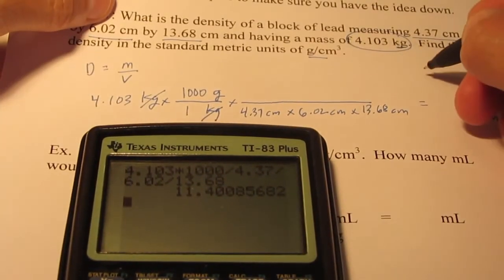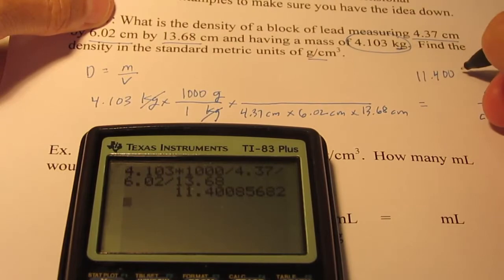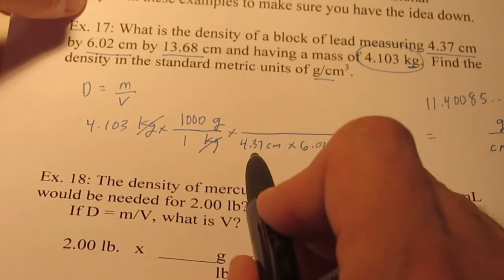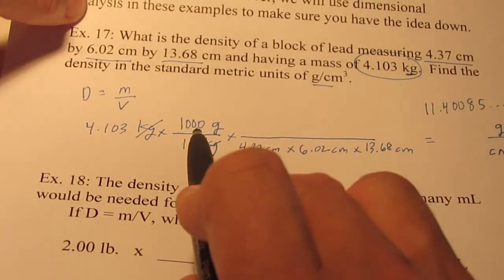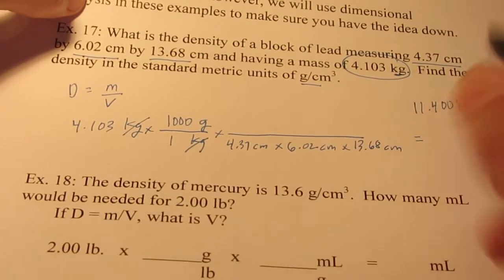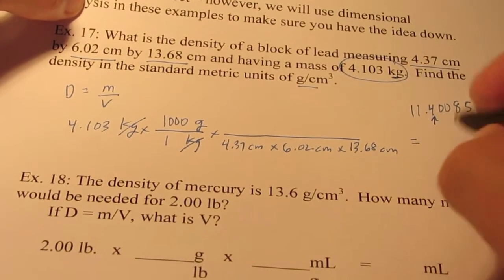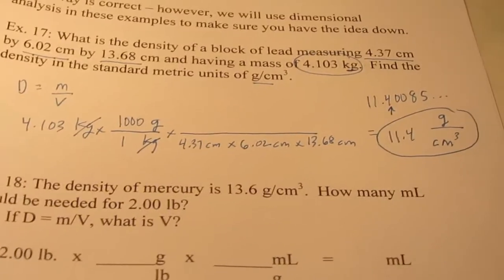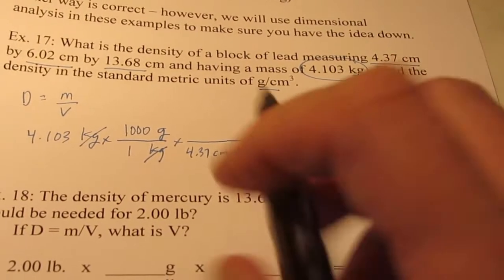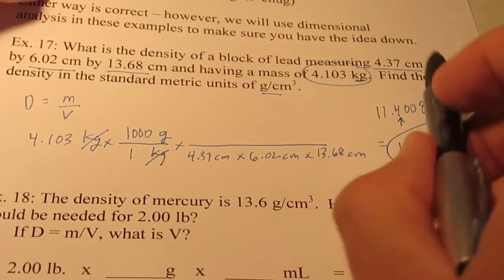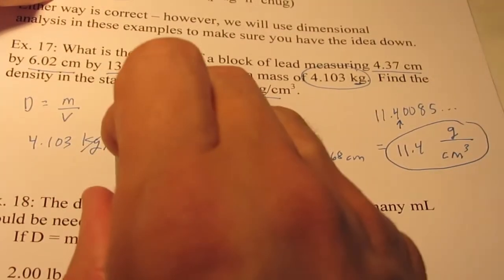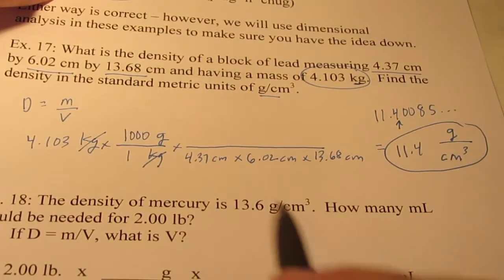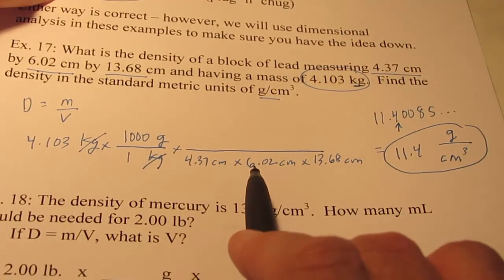My calculator says 11.40085 and some numbers after that. I have 3 sig figs in each of my length measurements, this is infinite, and I have 4 sig figs here. So I can have 3 in my answer. I round this off to 11.4 grams per cubic centimeter. You can approach this differently and still get the same answer.